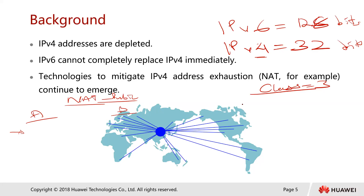We have Class A — the 10.0.0.0 network — then Class B — the 172.16 network — then Class C — the 192.168 network.